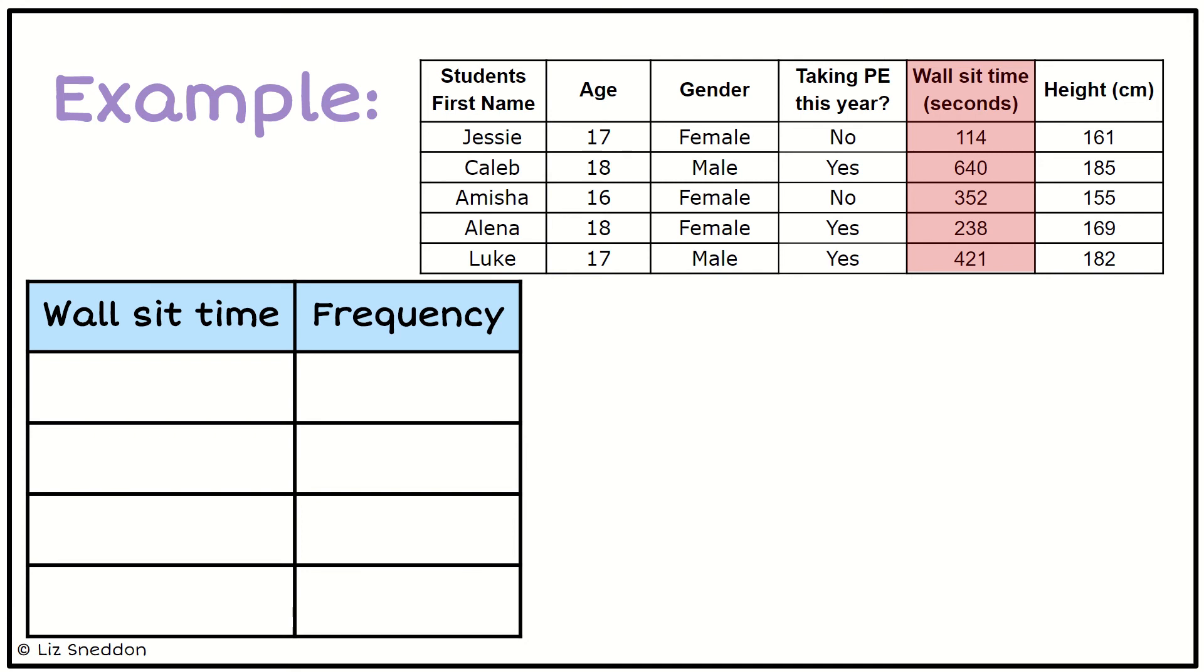Now I want to split the data up into equal size sections that go up to at least 640. I'm going to choose to split them into four equal size groups of about 200 wide.